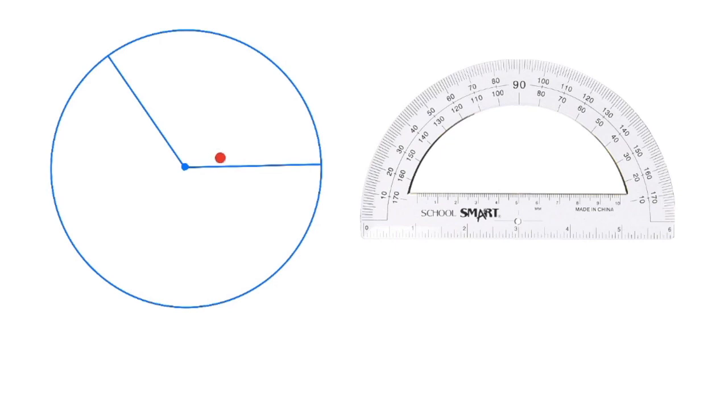If I wanted to determine the measure of this angle, I could take my protractor, line it up and measure that angle in degrees. Each little section on this protractor represents 1 degree.